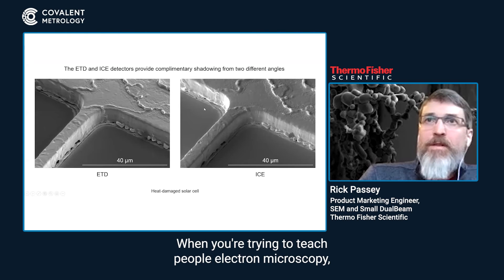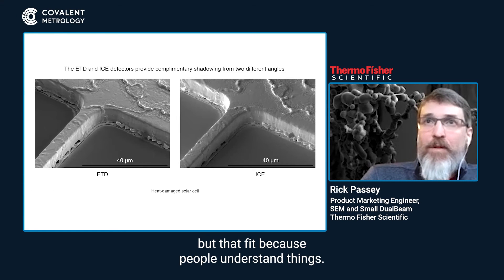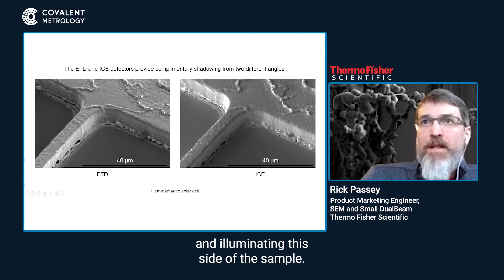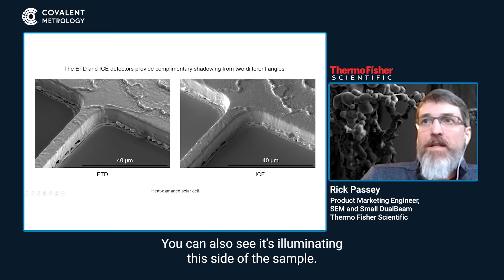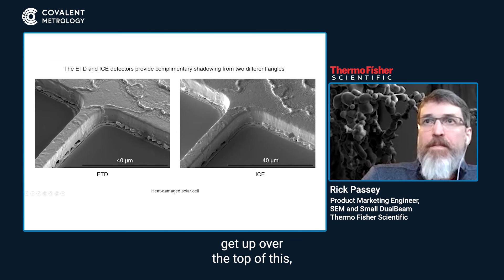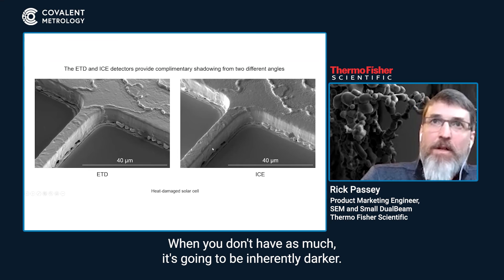When teaching electron microscopy, you end up using analogies that aren't perfectly accurate but that people understand. This is like the sun shining down from one direction and illuminating this side of the sample. You can also see it's illuminating another side, but right here we're in the shadow — electrons can't escape from this surface and get to the detector, so you get fewer of them, and when you don't have as many, the image is inherently darker.